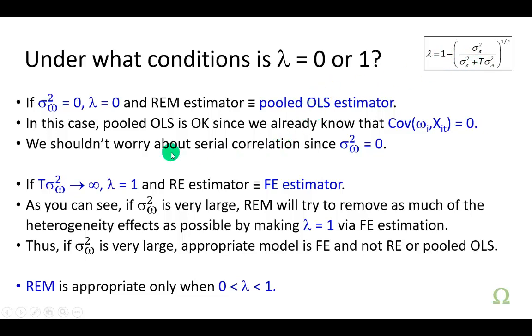If, on the other hand, variance of the firm specific error term is such a large number when multiplied by the time period, then we're going to have a denominator that, as it approaches infinity, will cause this quotient here to be pretty much zero. One minus zero is going to be one. And that's when random effects estimator will default to the fixed effects estimator.